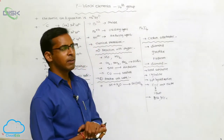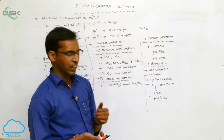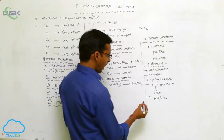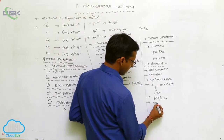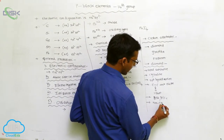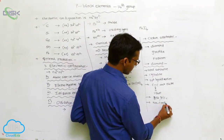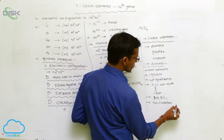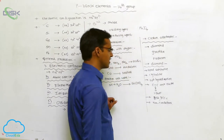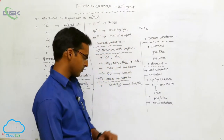Diamond is a non-conductor or insulator. It is a non-conducting substance, meaning it does not allow electricity to pass through it.